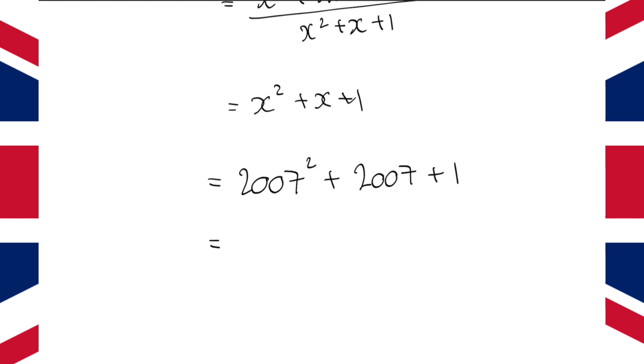2007 squared gives you 4,028,049. And then, you add 2008 and that gives you 4,030,057. And that is our final answer.